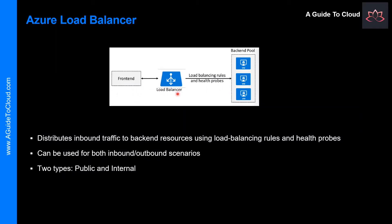Keep this diagram in mind since it covers the four components that must be configured for your load balancer. The first one is front-end IP configuration, then the backend pools, health probes, and the load balancing rules. These are the four main components you need to configure when you think about a load balancer.